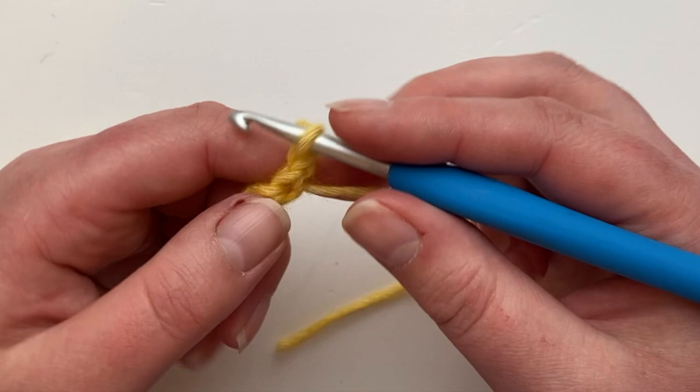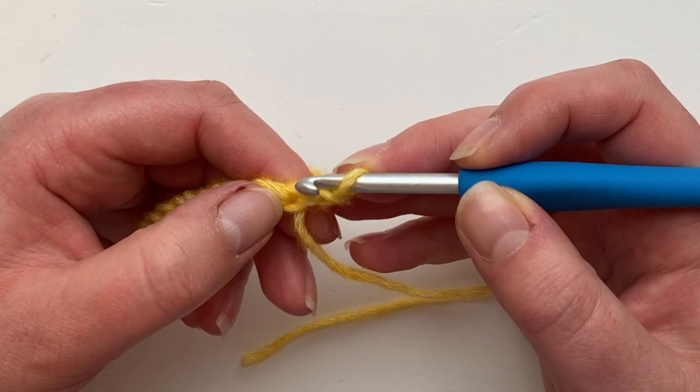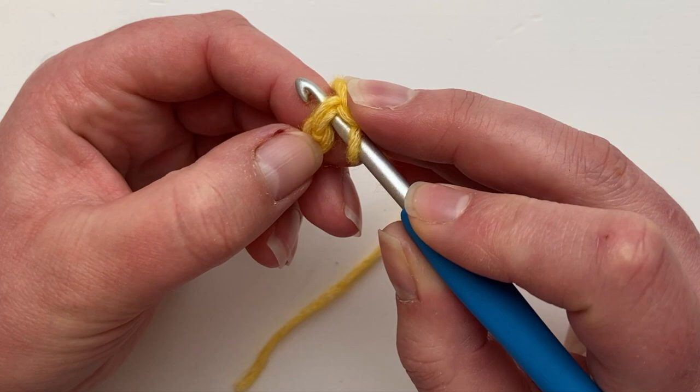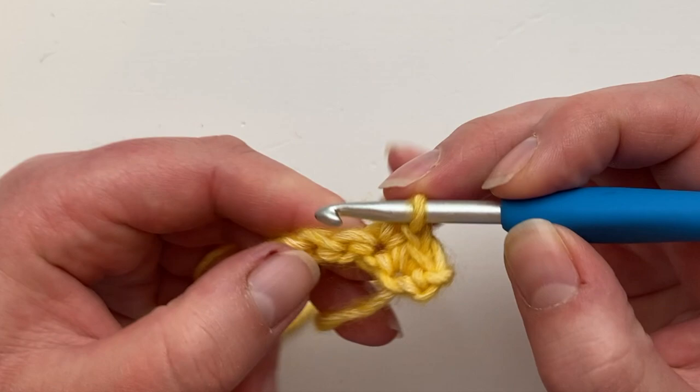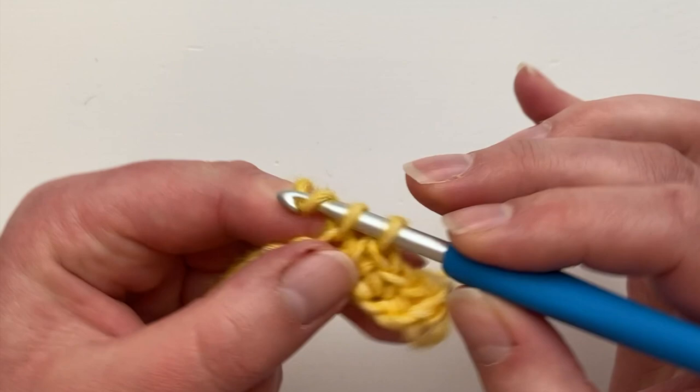So I'm going to work into the first stitch we made insert and already you can see you've got two strands over your hook like a normal stitch yarn over and pull through yarn over through two. Work your double crochets all the way along they go in so easily. You've already got that lovely natural hole to work in just like a foundation double crochet but I must say this technique is so much easier there.